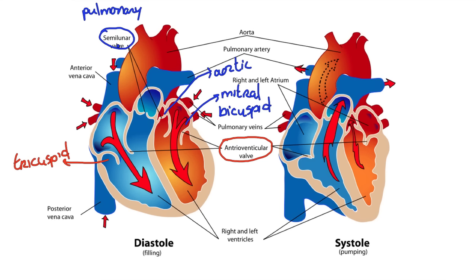Now the special thing about valves is that they allow blood to flow in one direction. You can see blood can flow into the ventricle, but it can't flow back. If it tries to flow back, these valves are going to shut. So all of these valves are one-way valves — they allow for blood to flow in one direction.